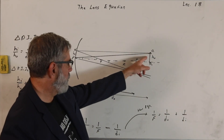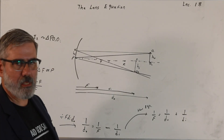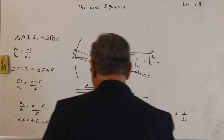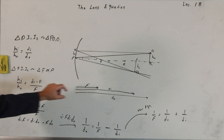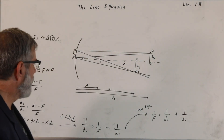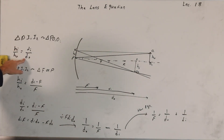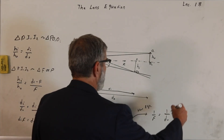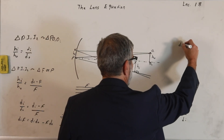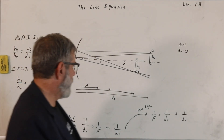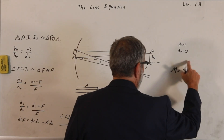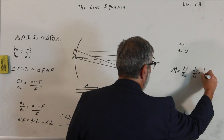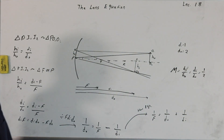The magnification is the ratio of the image height to the object height, which is also equal to the ratio of the image distance to the object distance. For example, if di equals 1 and do equals 2, then the magnification m equals hi over ho equals di over do, which is one-half — so the image would be reduced by a factor of half.